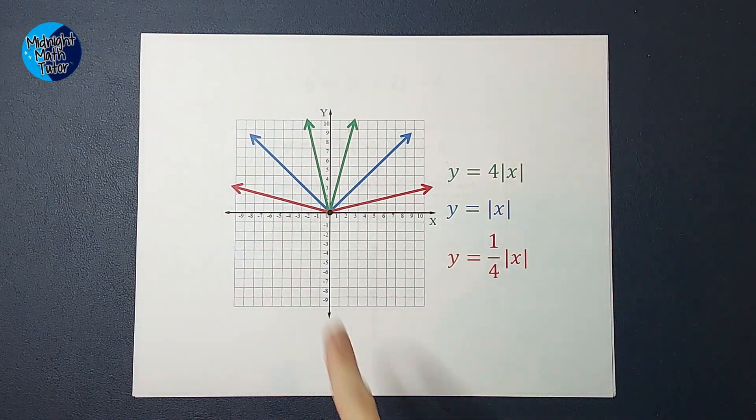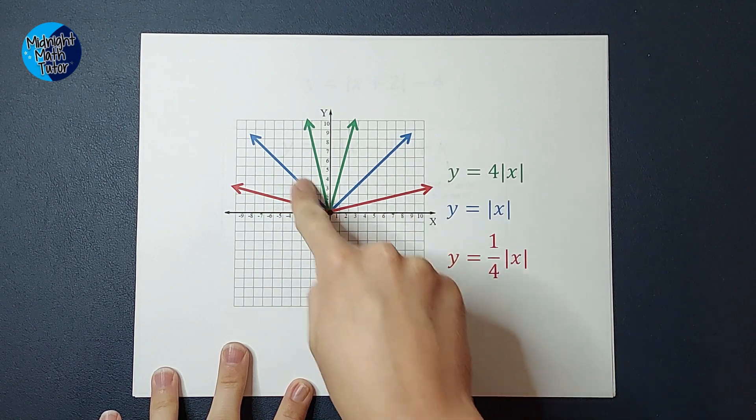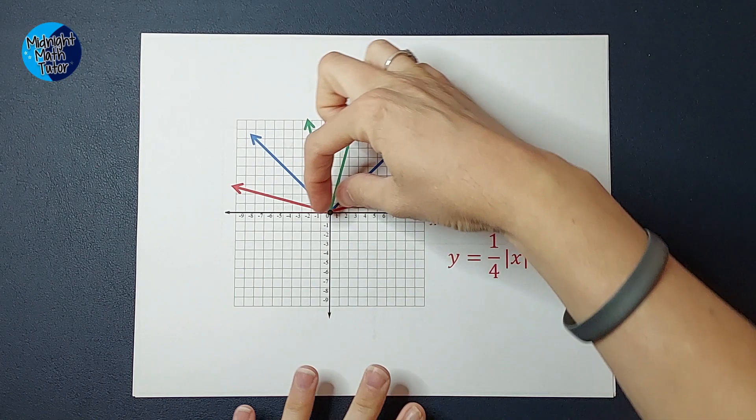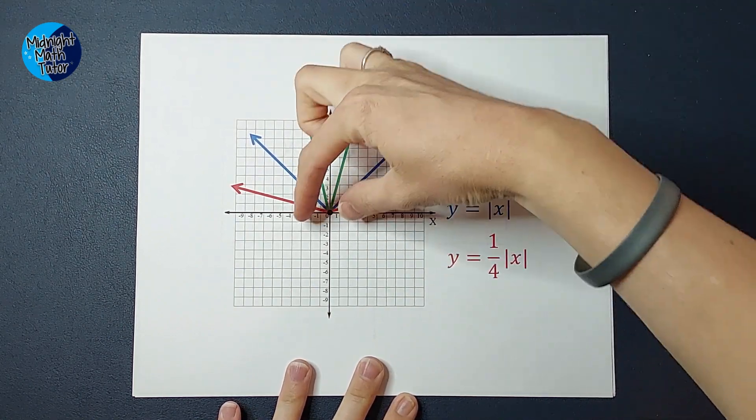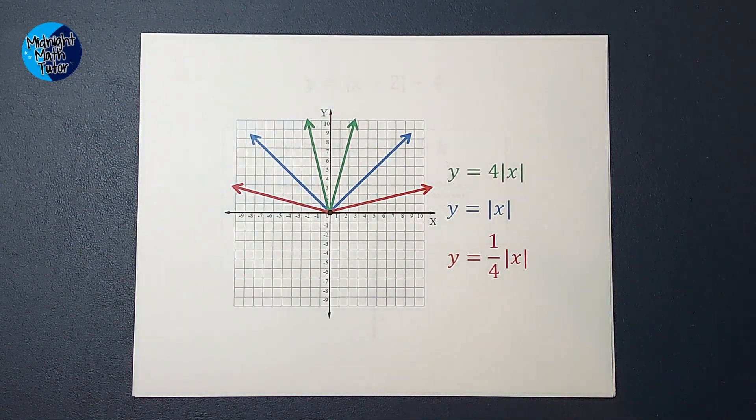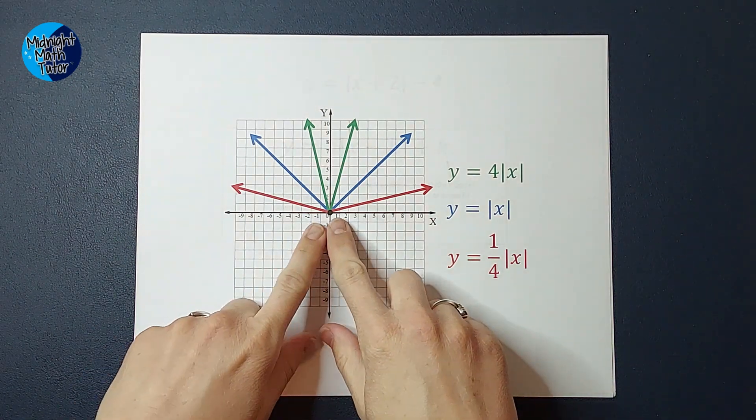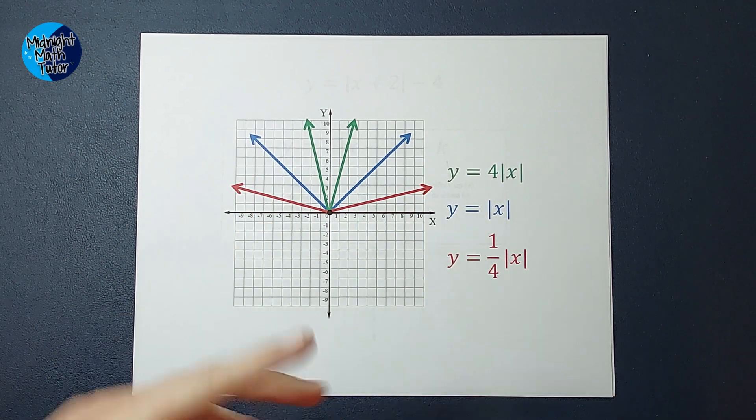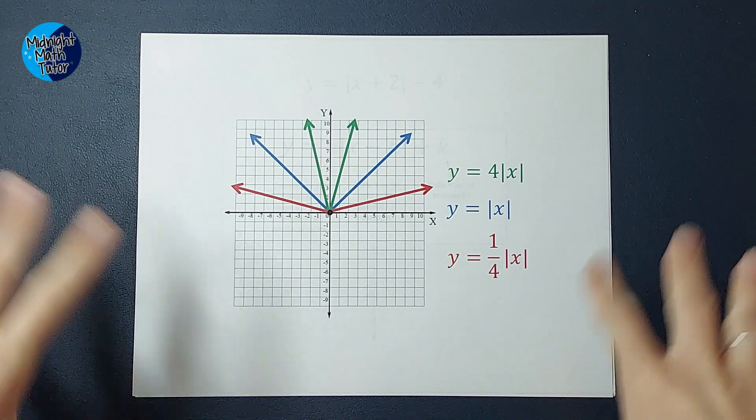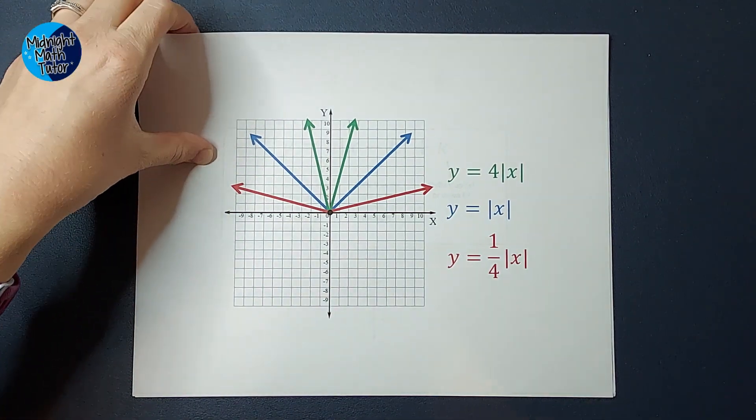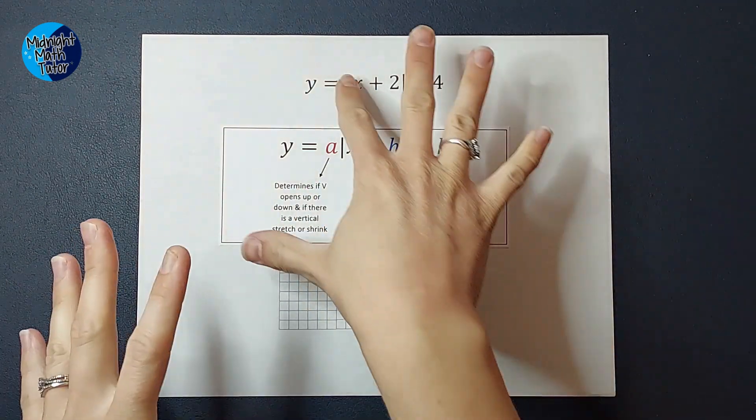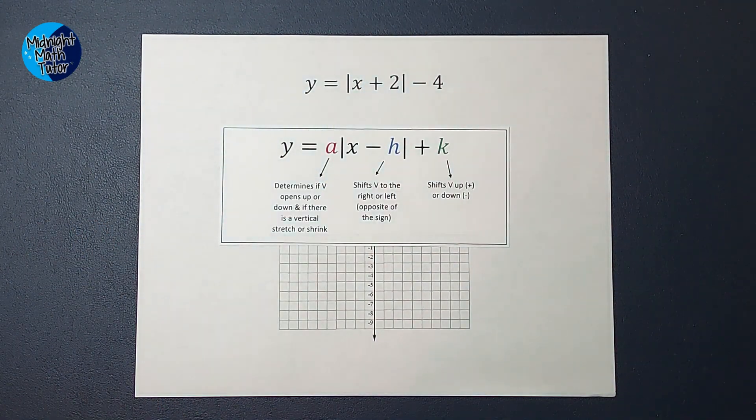So that blue graph, you see that V is the parent graph I just showed you. The green you can see has a four out front and you see how it's still a V, but it's stretched out. And same with the red, we have a fraction out front, one fourth. It's still, it's not looking as much like a V, but it's still technically a V. But it's compressed, it's a lot flatter. So that's in your future. If you're not doing those quite yet, just kind of a visual for you. That is what the number out front, how that affects our graph.